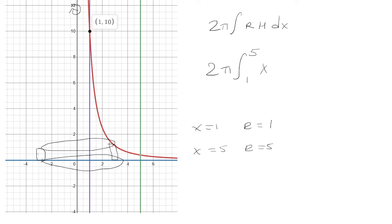Now the height is the function, which is 10 over x squared. Now we multiply these. We have 2π times the integral from 1 to 5. x times 10 over x squared is just 10 over x.